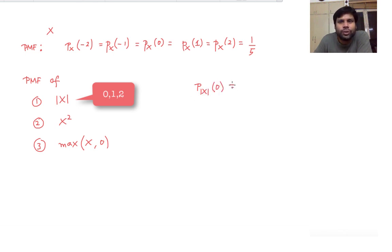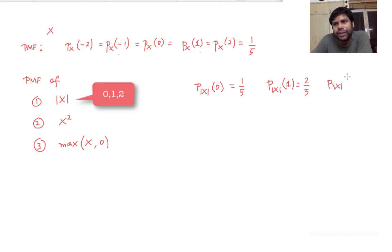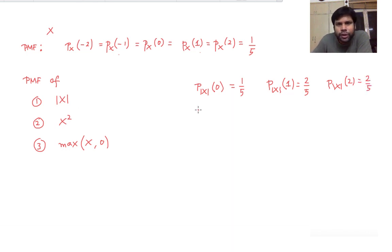What is the probability that |X| equals 0? That's 1 by 5, because it happens when X takes value 0. What is the probability that |X| equals 1? That happens when X is either minus 1 or 1, which gives probability 1/5 + 1/5 = 2 by 5. Then the probability that |X| takes value 2 is likewise 2 by 5.